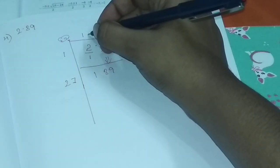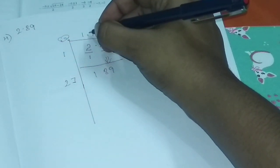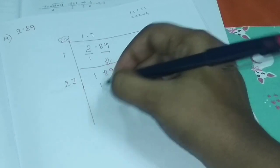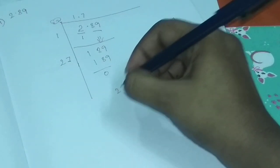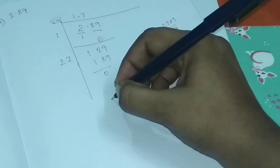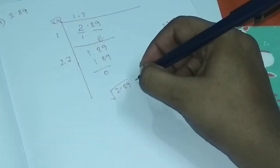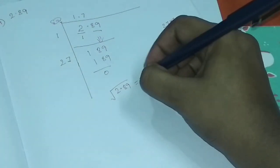We have a decimal point, so 1.7 times 7 is 11.9, and 1.89 brings down to 0. So 2.89 square root is equal to 1.7.